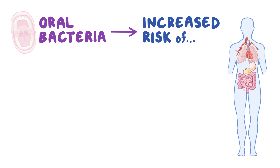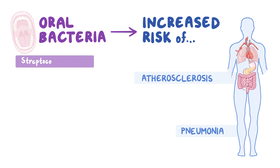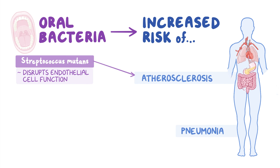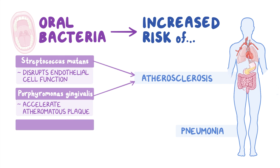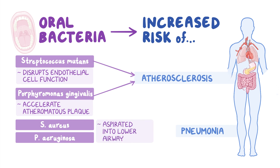Oral bacteria can also contribute to inflammatory diseases such as atherosclerosis or pneumonia. In atherosclerosis, oral bacteria such as Streptococcus mutans could contribute directly by disrupting endothelial cell function, while periodontal bacteria such as P. gingivalis could accelerate the development of atheromatous plaque by infecting epithelial cells that produce pro-inflammatory cytokines, which enter the blood circulation and affect cells in the atheromatous plaques, thus leading to atherosclerosis. Poor oral hygiene can increase colonization with pathogens such as S. aureus or P. aeruginosa that can be aspirated into the lower airway, increasing the risk of pneumonia.